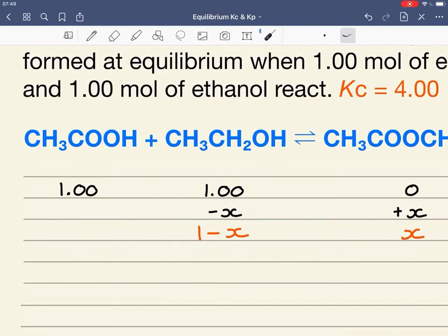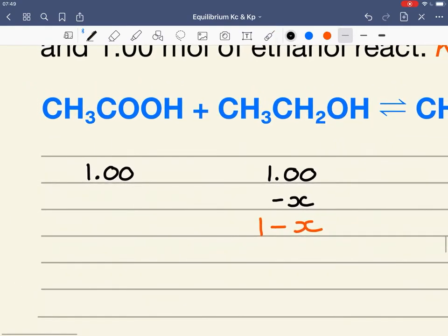The equation tells me for every mole of ethyl ethanoate which reacts, a mole of ethanoic acid reacts. So this will also go down by X, to give me 1 minus X moles at equilibrium.